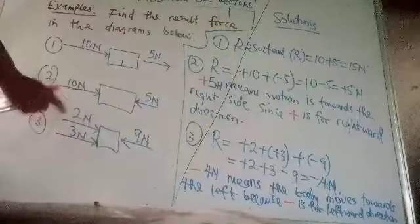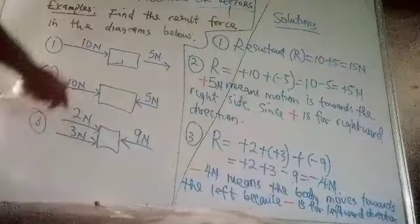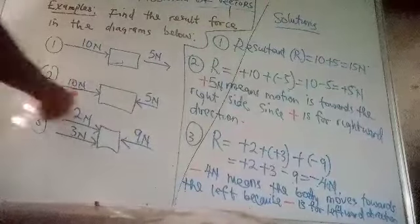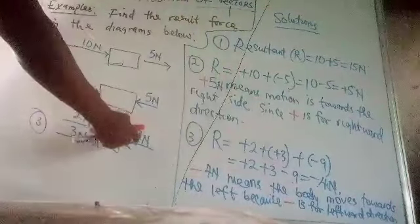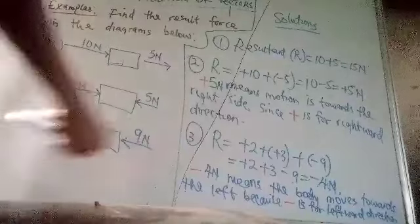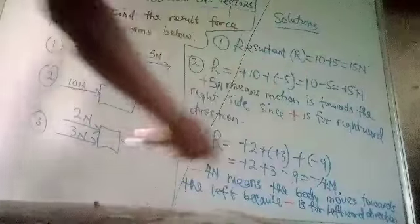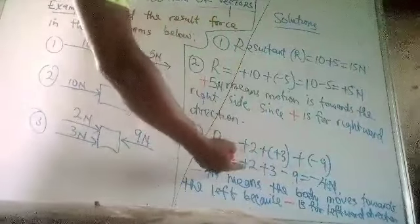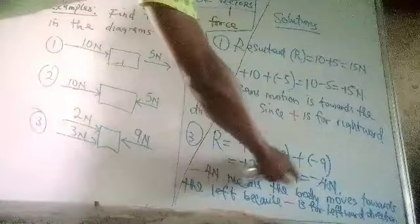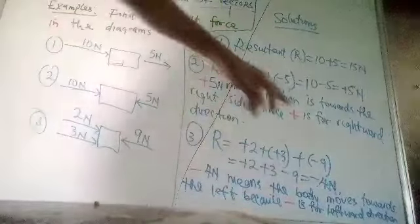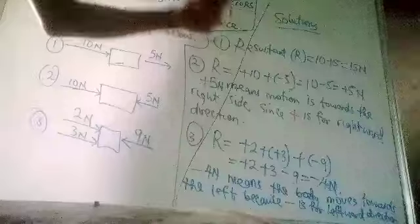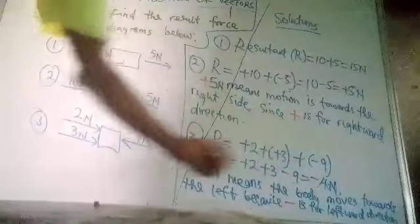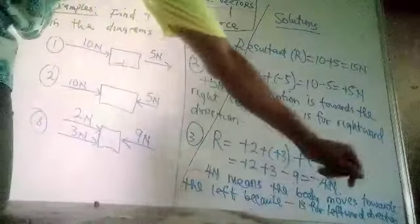Number three. 2 Newton and 3 Newton are positive positive because both of them are facing right. That's why you put positive here. While this 9 Newton is the only one facing left. That's why I put negative here. But when you add them together, plus and minus will give you minus. So plus 2 plus 3, that's plus 5. Plus 5 minus 9, minus 4. So that negative is showing us that the direction of this body is towards the left because negative is towards the leftward direction.